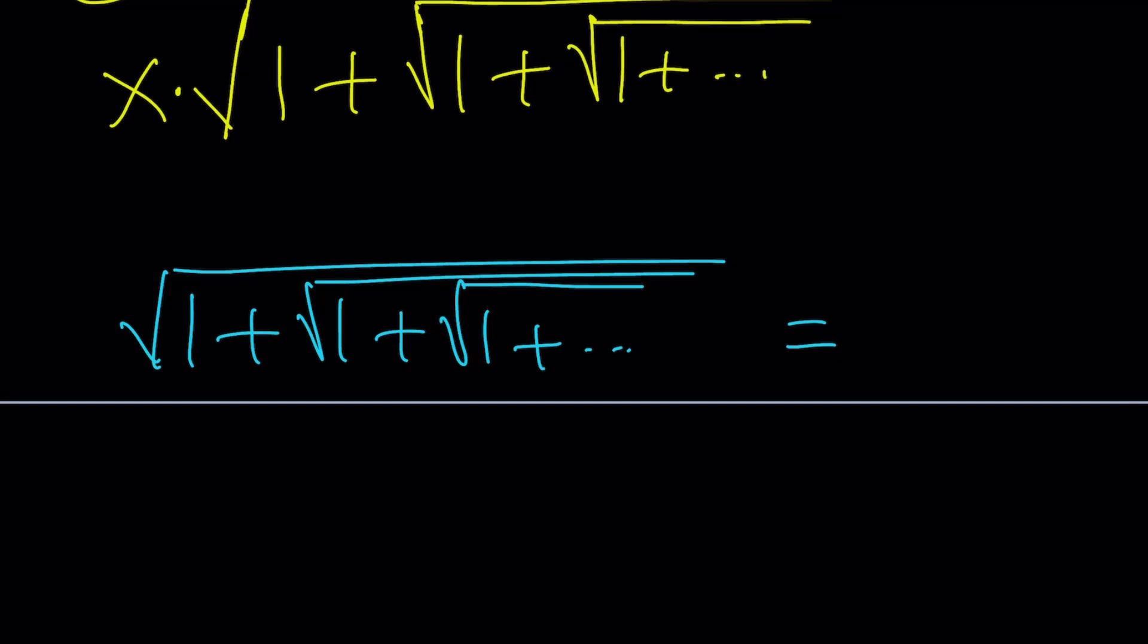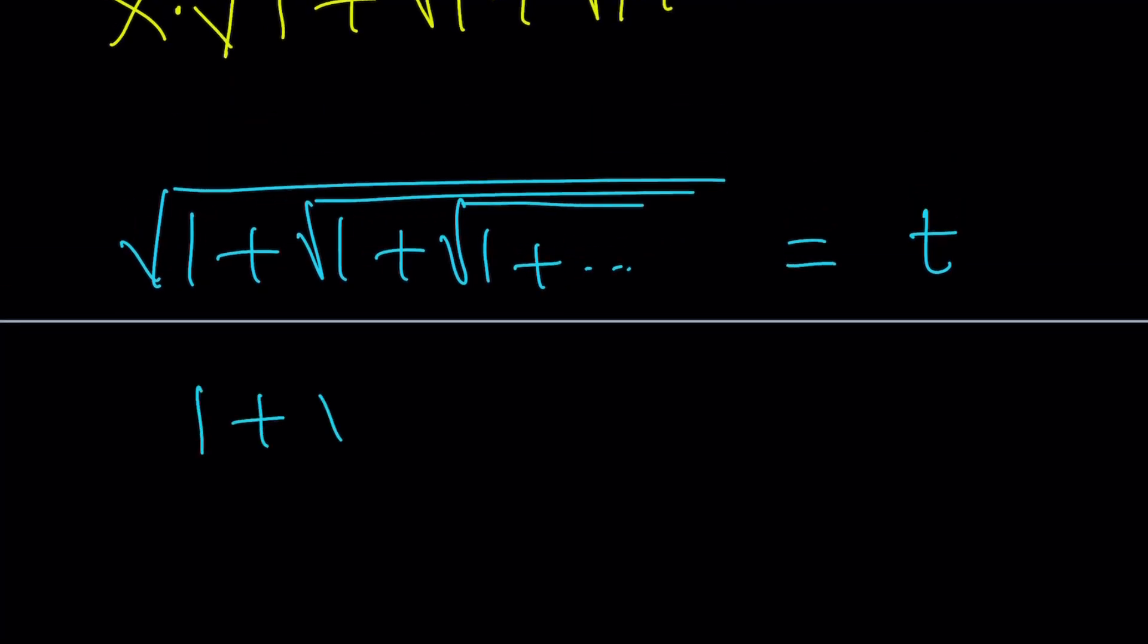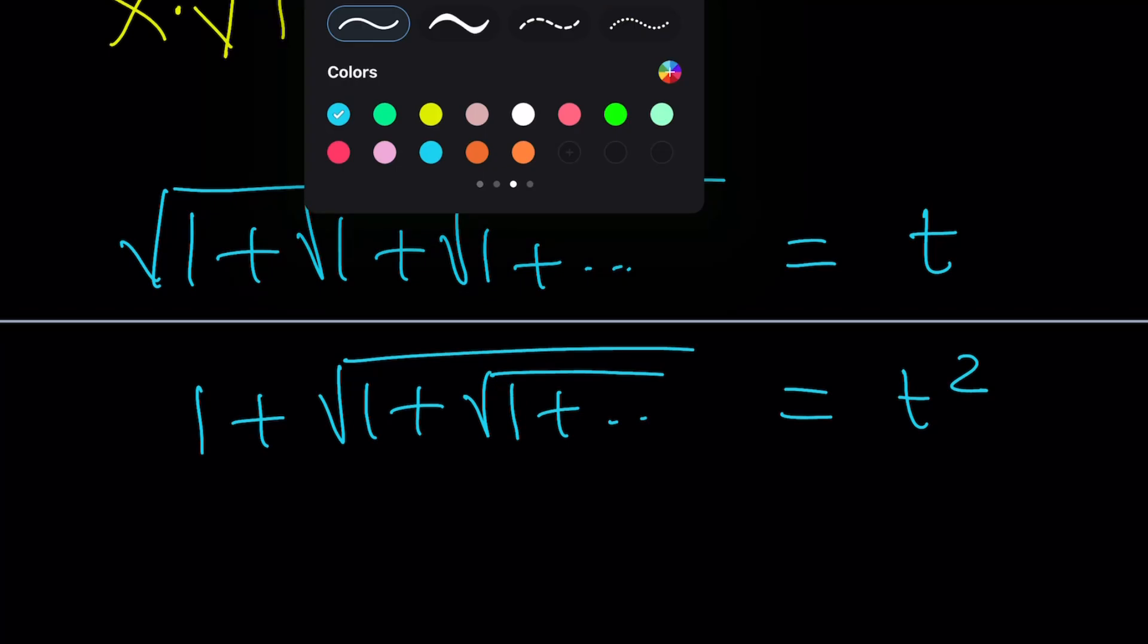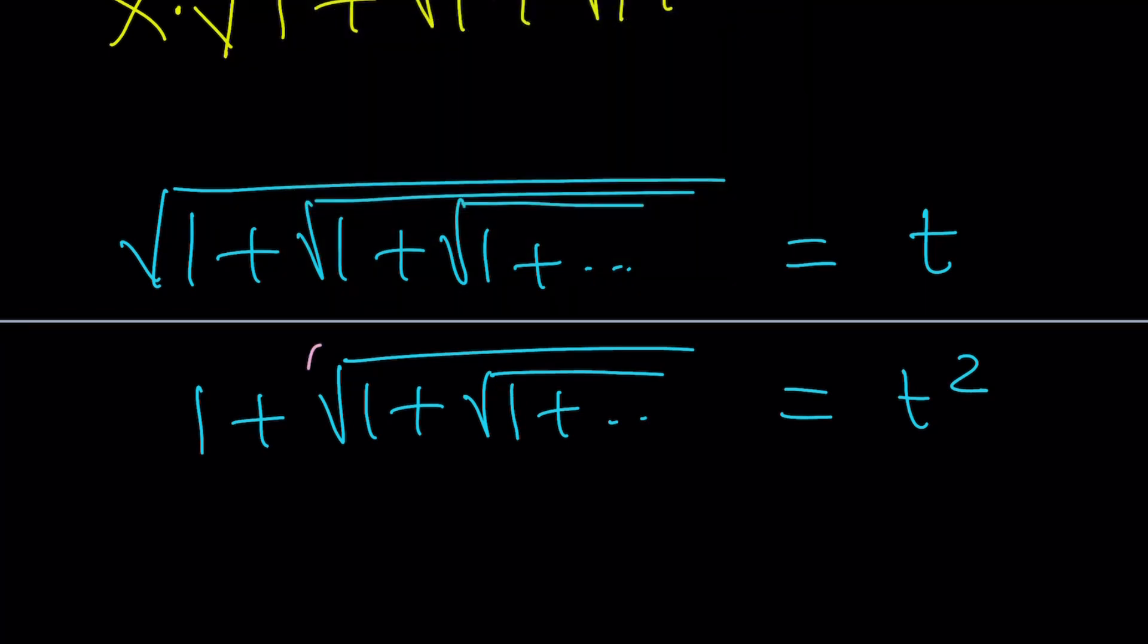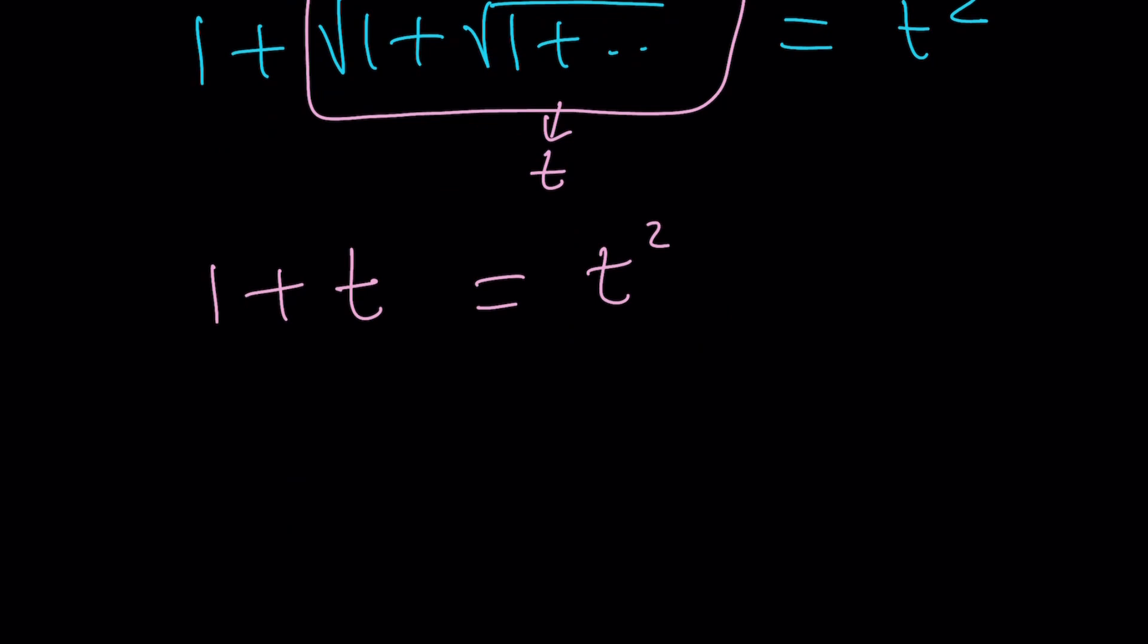Let's go ahead and set it equal to, how about t? t is my favorite variable these days. And now I'm going to go ahead and square both sides. And then I'm going to be getting this equals t squared. But guess what? This is the same thing as t. Is that a surprise? Pretend to be surprised. And you get 1 plus t equals t squared. Or t squared minus t minus 1 equals 0.